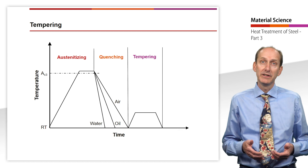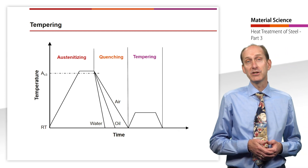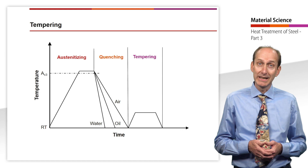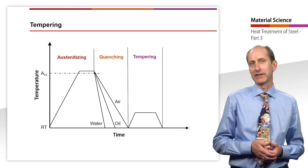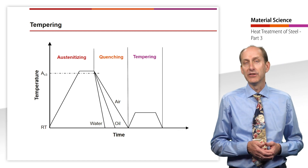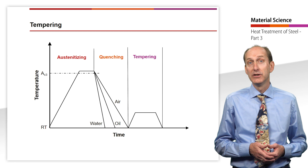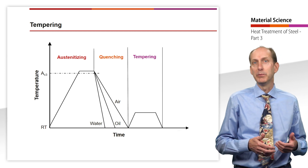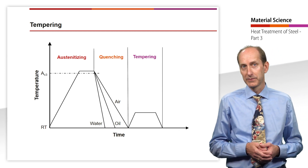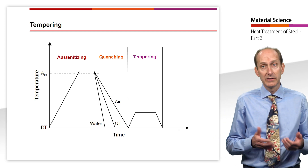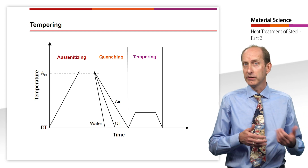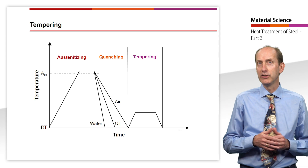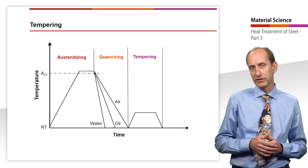Tempering is sufficient to give the quenched components, which are initially glass-hard and also brittle as glass, the necessary toughness so that they do not break by simply being struck. Yield strength, tensile strength, and correspondingly the hardness are only slightly reduced by this heat treatment.